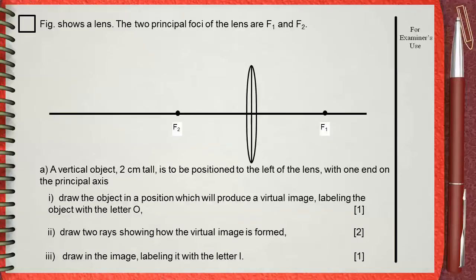Part 1: Draw the object in a position which will produce a virtual image, labeling the object with the letter O. Part 2: Draw two rays showing how the virtual image is formed. Part 3: Draw in the image, labeling it with the letter I.